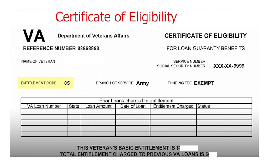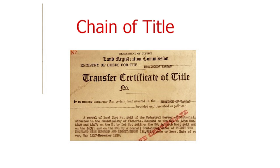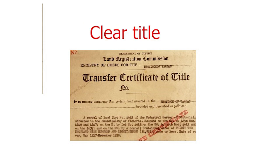Certificate of Eligibility: a document issued by the federal government certifying a veteran's eligibility for a Department of Veterans Affairs loan. Certificate of Title: an official document that shows who is the legal owner of a property. Chain of Title: the history of all previous owners and the sequential transfer of the title up to the most recent owner. Clear Title, also known as clean title: a property title that is free of liens or disputed legal questions as to ownership of the property.